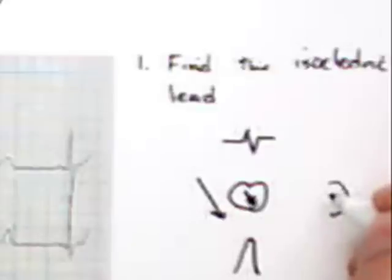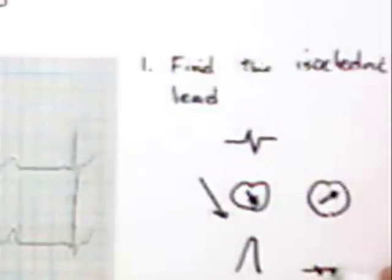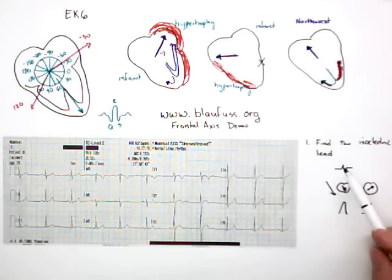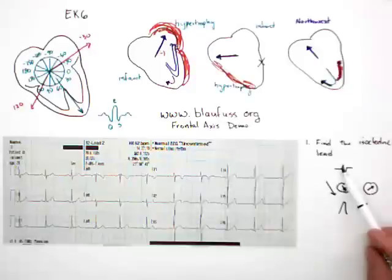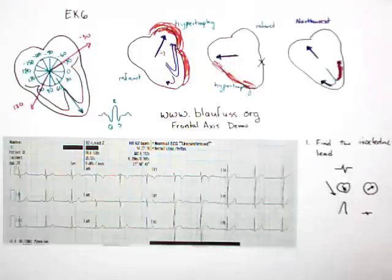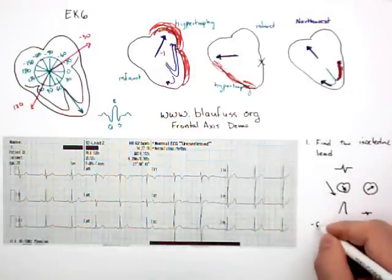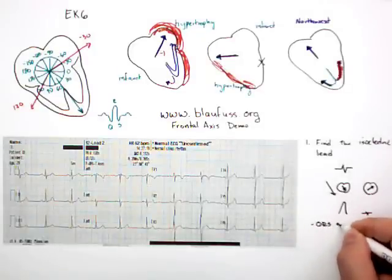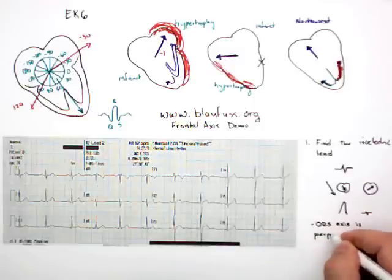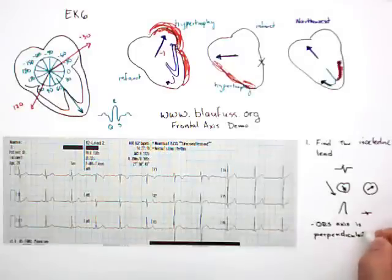On the other hand, if the voltage is running perpendicular to our lead, then we see isoelectric. So by finding the isoelectric lead, what we're doing is we're finding that the voltage is traveling perpendicular to that lead. So the QRS axis is perpendicular to the isoelectric lead.